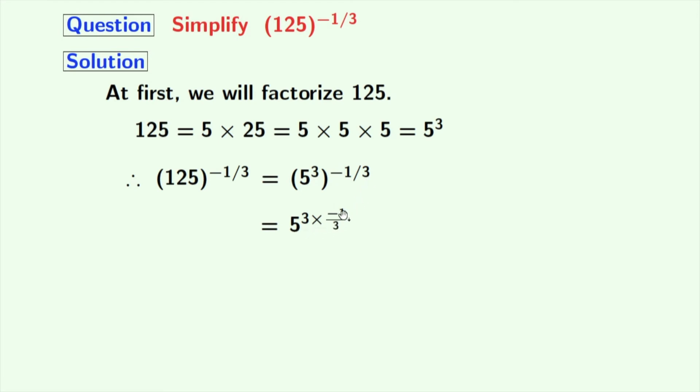Now we will rewrite this as 5 to the power of 3 times minus 1 by 3. We have used here the property: a to the power of m, whole to the power of n, is equal to a to the power of m times n. Here a is 5, m is 3, and n is minus 1 by 3.